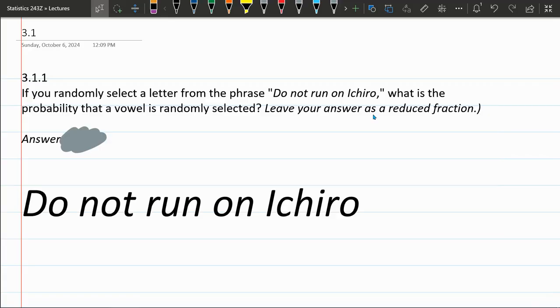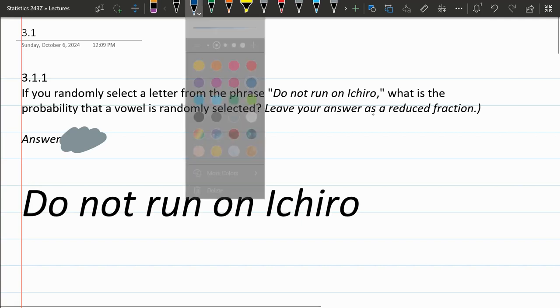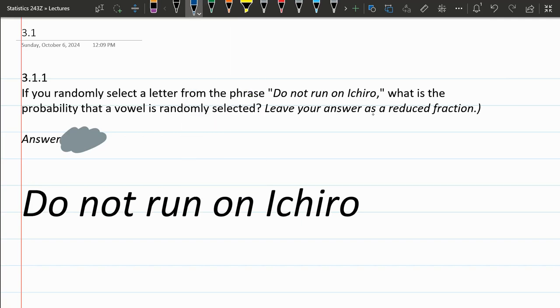This is a probability question, and we're going to randomly select a letter from this phrase, do not run on Ichiro. And we want to know the probability it's a vowel.